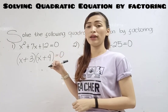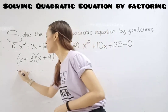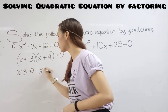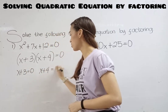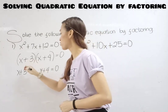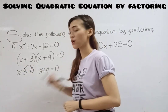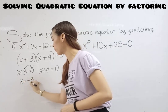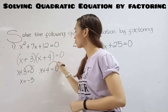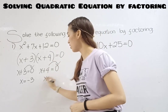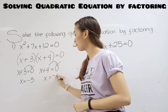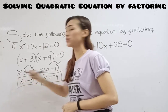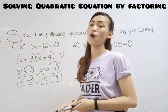Next is equating to 0. So x plus 3 equals 0, and x plus 4 equals 0. Transpose 3 to the right — positive 3 becomes negative 3. Transpose 4 to the right — positive 4 becomes negative 4. The answer is x equals negative 3 and x equals negative 4.